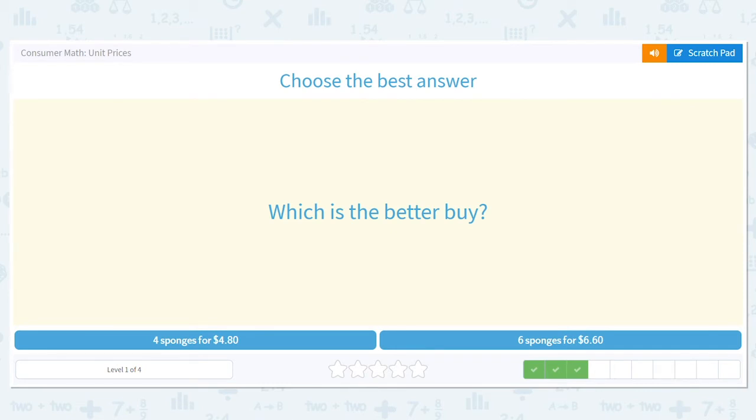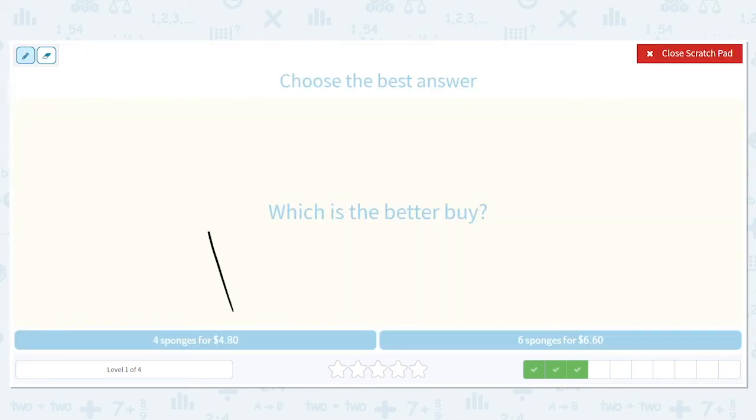What is the better buy? 4 sponges for $4.80 or 6 sponges for $6.60? Well, if we divide $4.80 by 4 we get $1.20. If we divide $6.60 by 6 we get $1.10. So which one's the better buy? The cheaper one, right? 6 sponges for $6.60, cheaper.